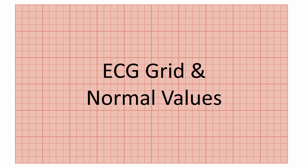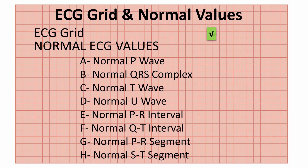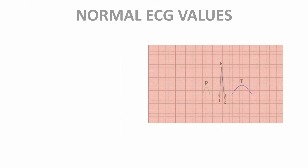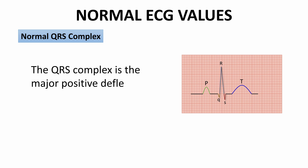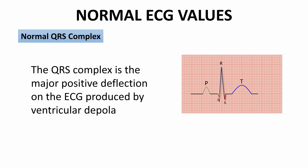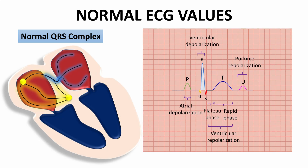In the last lectures, we have talked about the ECG grid and the normal P wave. In this lecture, we will continue the normal values and start with the normal QRS complex. The QRS complex is the major positive deflection on the ECG produced by ventricular depolarization. It represents the timing and sequence of synchronized depolarization of the right and left ventricles.